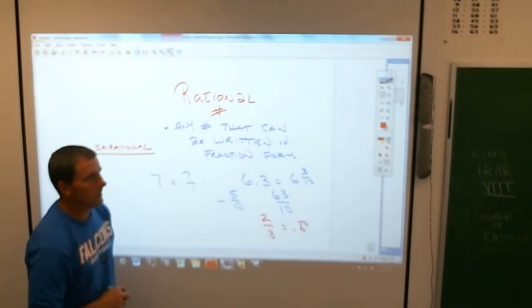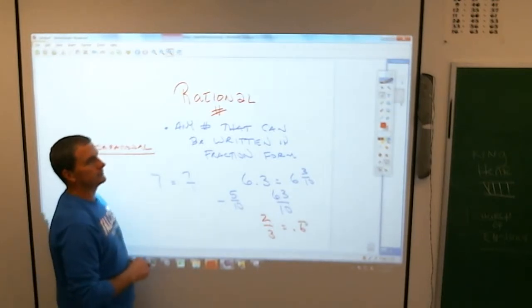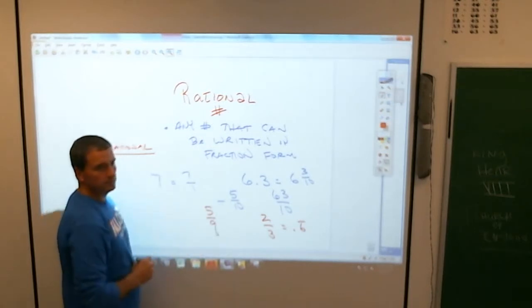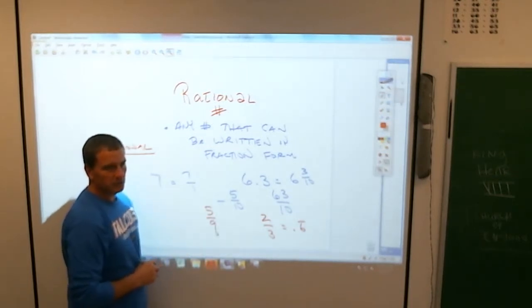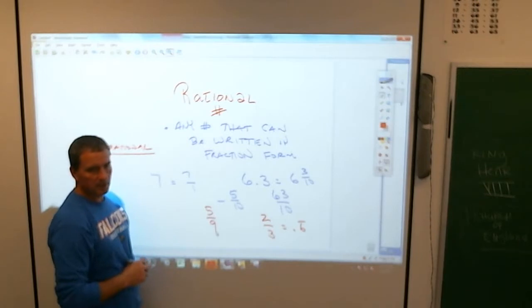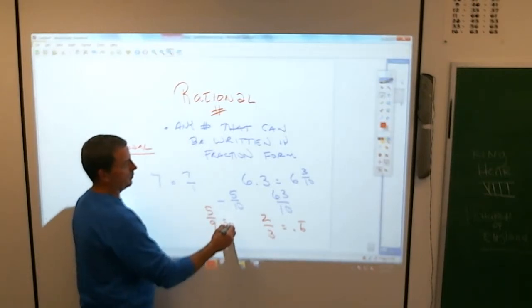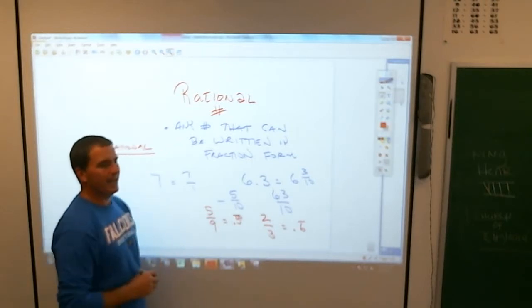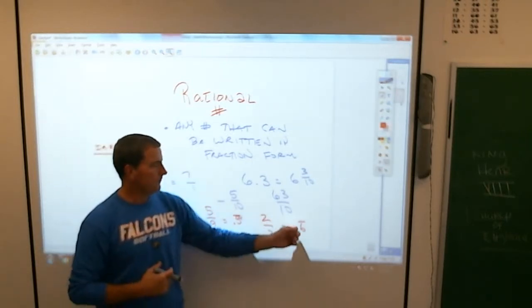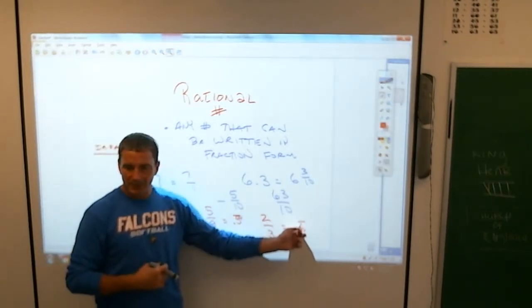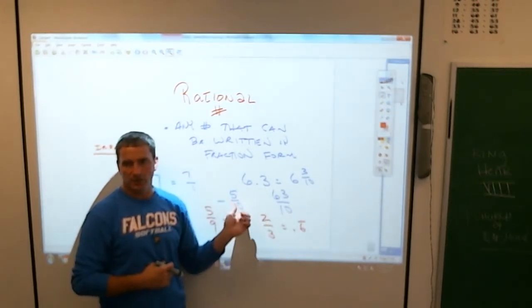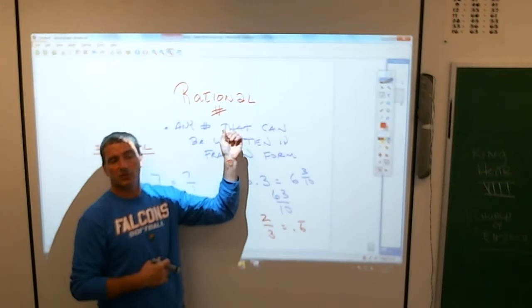Does anybody know what five-ninths is as a decimal? Did I ever give you the reference sheet? Five-ninths is 0.5 repeater. And the deal with that is, if a decimal is a repeater, you can always make it into a fraction. So all repeating decimals are also rational.